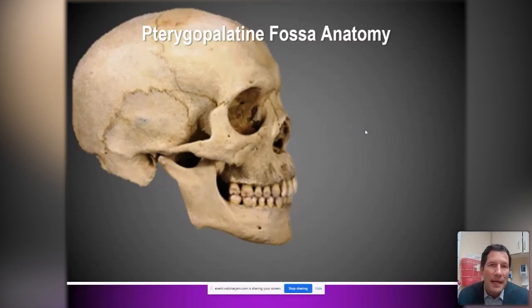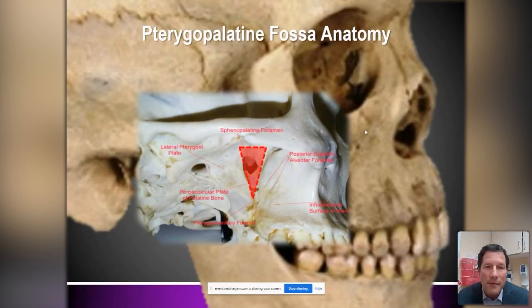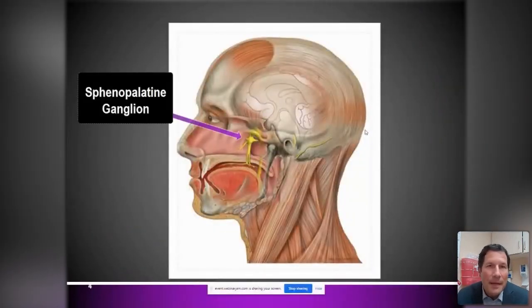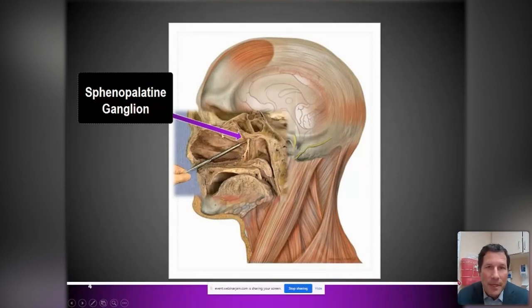The sphenopalatine ganglion lives within the pterygopalatine fossa, right where the red triangle is on the skull image. Expanding into that region, you can see the pterygopalatine fossa is bordered by the maxilla in front, with a large chunk of nervous system tissue — the sphenopalatine ganglion — living there, along with the maxillary artery in the pterygopalatine branch and fatty tissue all around it. The thing about the sphenopalatine ganglion is it's really easy to get to through the nose — it lives literally three millimeters behind a mucous membrane in the lateral portions of the nose.